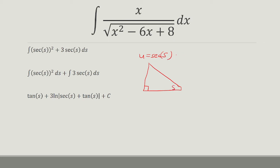So this is u equals 1 over cosine of s. And secant is 1 over cosine. So that means cosine of s is equal to 1 over u. And so that's just adjacent over hypotenuse. Pythagorean theorem says this is the square root of u squared minus 1.